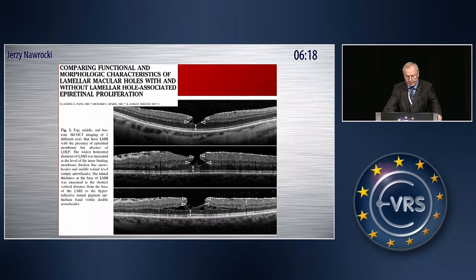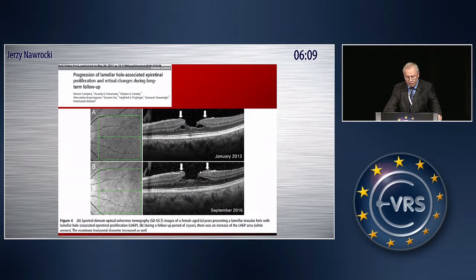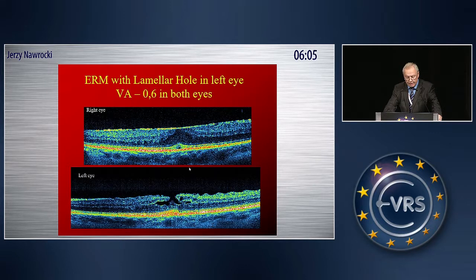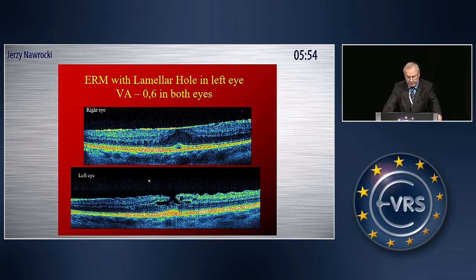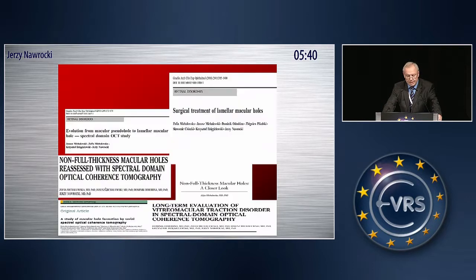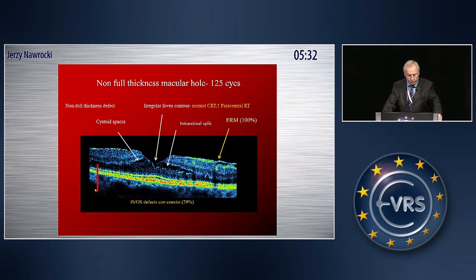We then learned that lamellar macular hole epiretinal proliferation may grow over time or change its appearance. My interest with lamellar macular holes began in 2006 when I had a patient — our first spectral domain OCT case — where one eye had a classical epiretinal membrane and the other had a lamellar macular hole. It was very strange to have two diseases in the same patient. We wrote many papers on that topic, and our first paper found that epiretinal membrane is present in all cases.